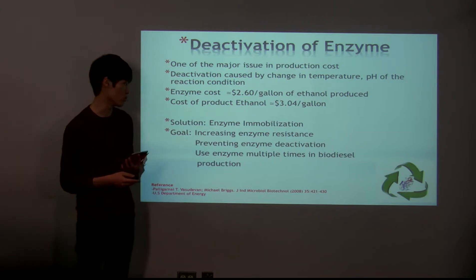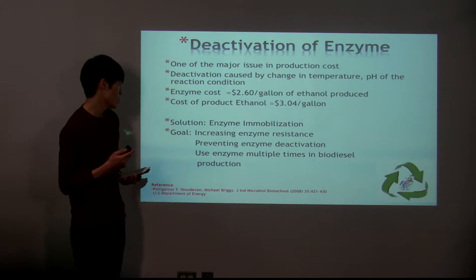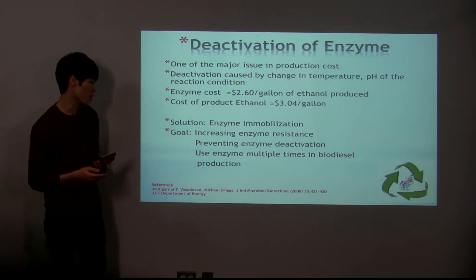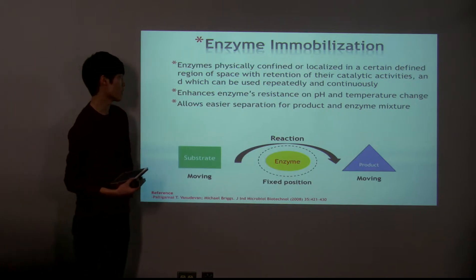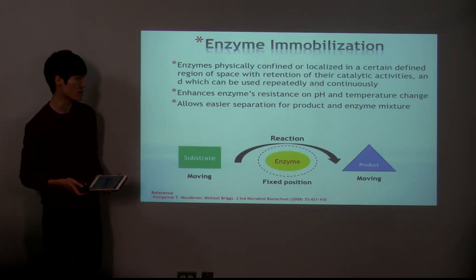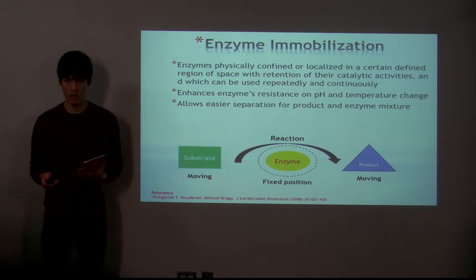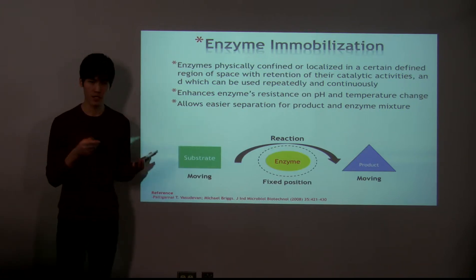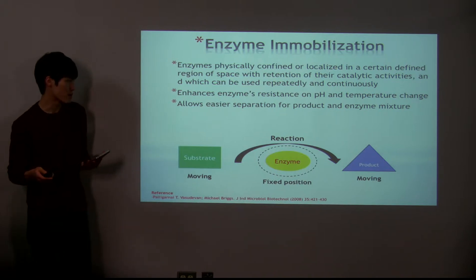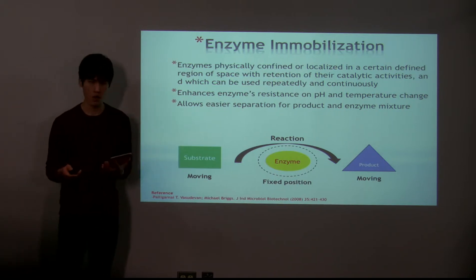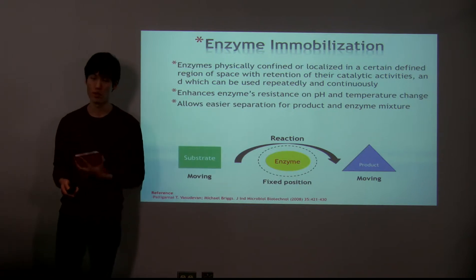The goal of the process is to increase the enzyme's resistance and eventually prevent enzyme deactivation. Enzyme immobilization can allow one to use the enzyme multiple times in biodiesel production. It is defined as enzymes physically confined or localized in a certain defined region of space with retention of their catalytic activities, which can be used rapidly and continuously. In simple terms, it's basically fixing the enzyme in one position and allowing the substrate to flow over it, which also makes it easier to separate products.